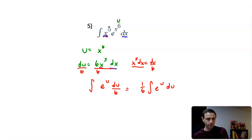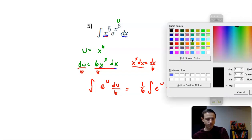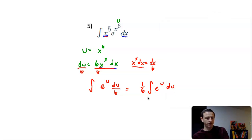And then we have a really quick integration there. The integral of e to the u is e to the u, so I'm going to have one-sixth e to the u plus c. Don't forget to substitute back in your u, so I'm going to have one-sixth e to the x to the sixth plus c.